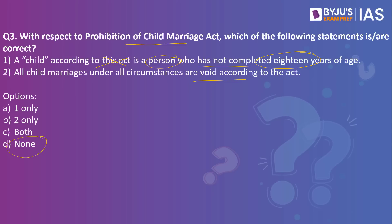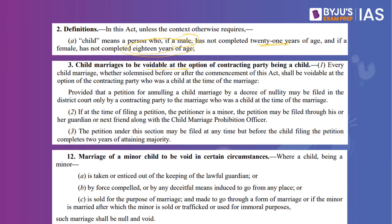The second statement says all child marriages under all circumstances are void — this is also wrong. Under Section 3, child marriages are voidable at the option of the contracting party being a child. For example, if a child was married, after becoming a major she has two years to approach a court of law and get the marriage declared voidable. It is not void by default — it is voidable. However, in certain specific circumstances it is void.